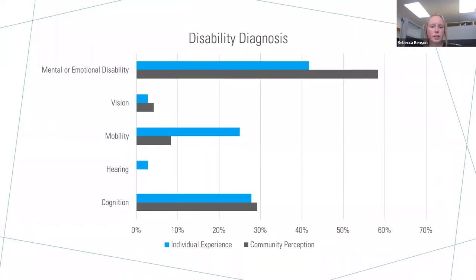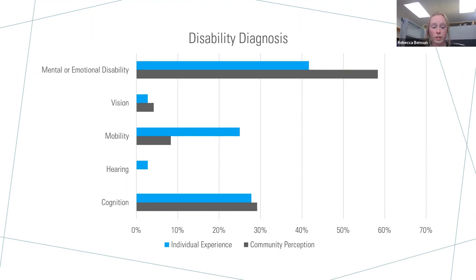Looking at disability diagnosis, I asked individuals with disabilities to choose which category their disability falls into. I realize this doesn't cover everything, but it was as broad as I could get while keeping it concise. I asked the community what they thought was the most prevalent disability diagnosis. As you can see, they lined up — mental or emotional disability is most prevalent, followed by cognition and then mobility.